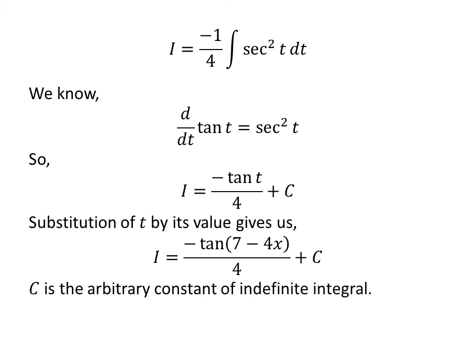Substitution of t by its value gives us I is equal to minus tangent of 7 minus 4 times x upon 4 plus capital C.